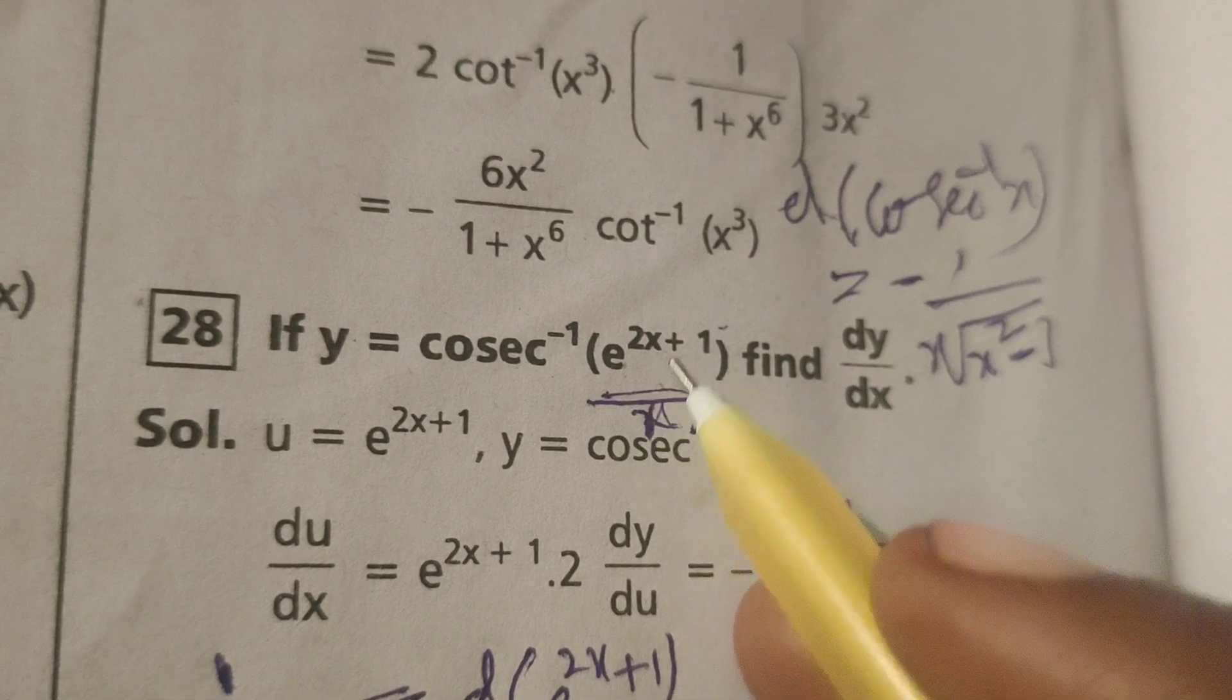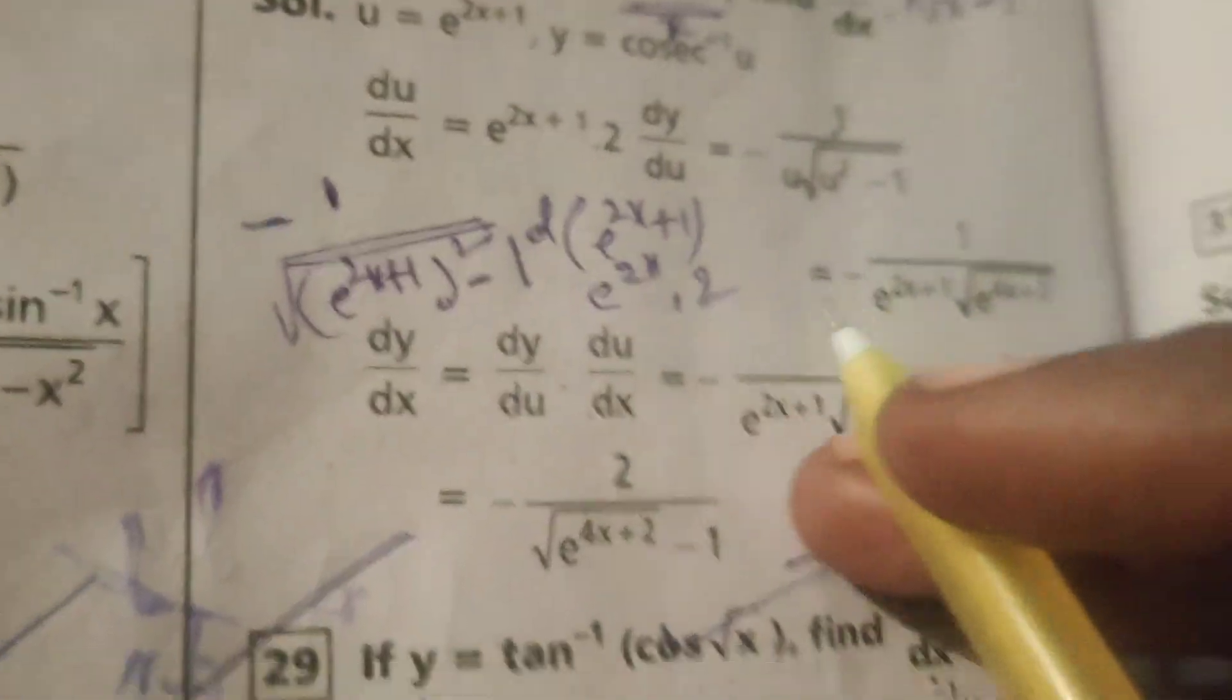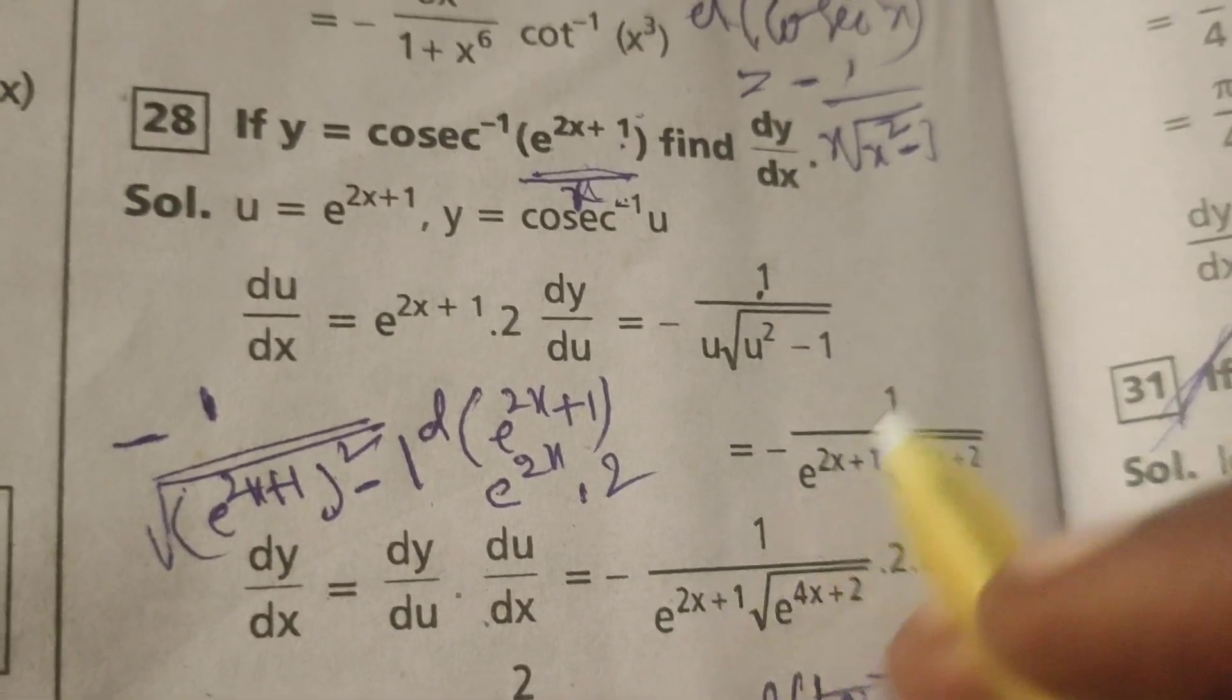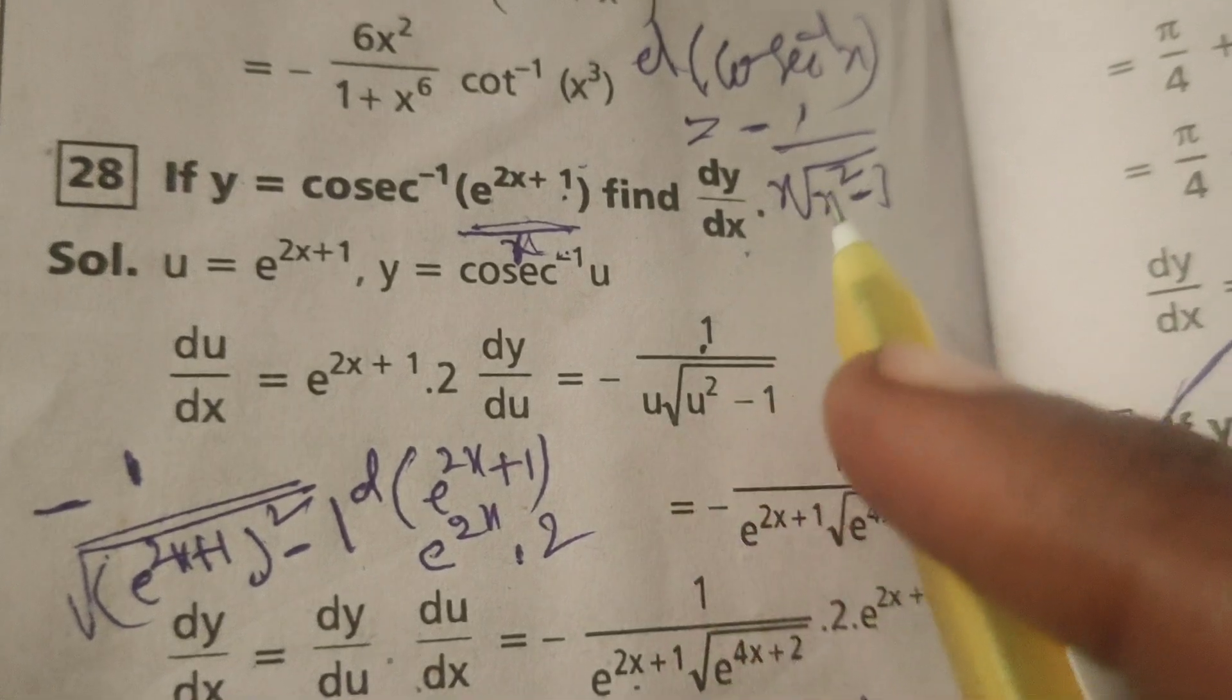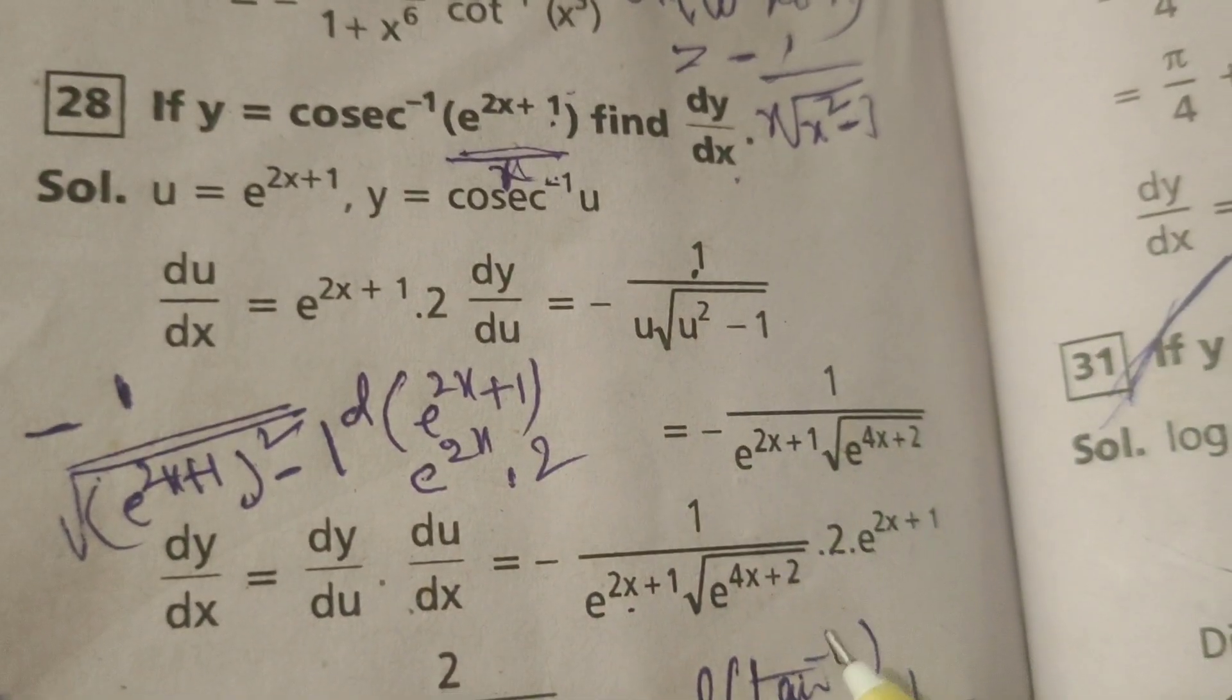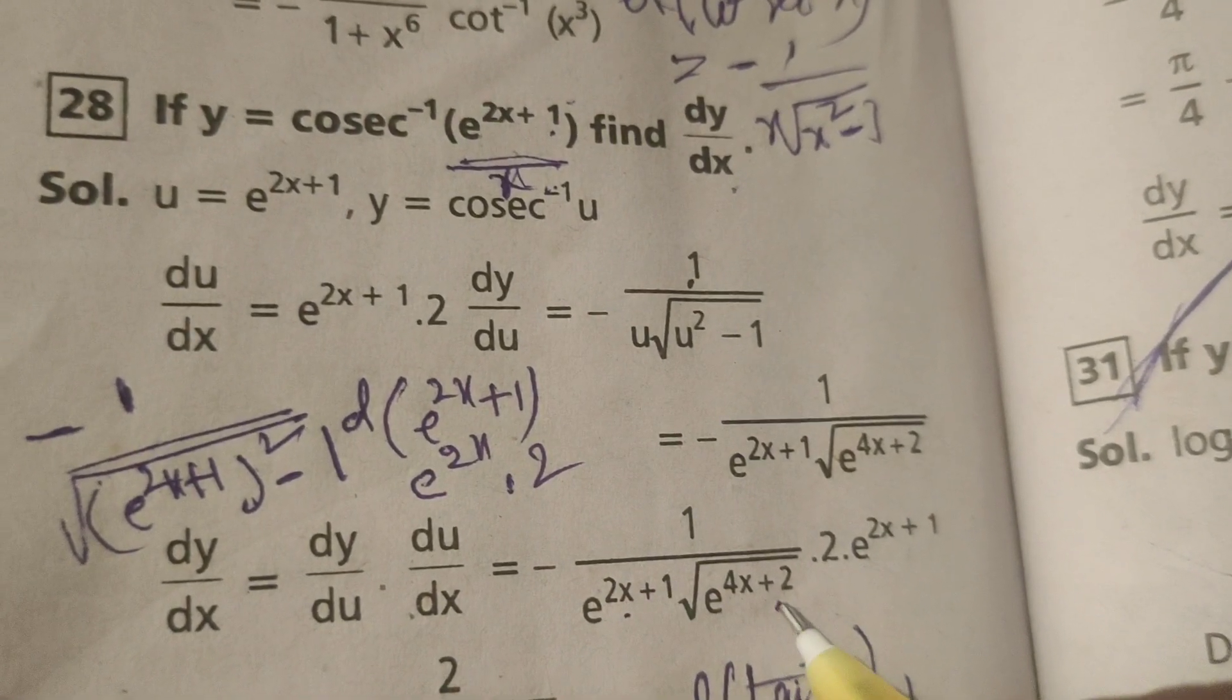But in place of x here, e power 2x plus 1 is there. So here write minus 1 by x means e power 2x plus 1. So e power 2x plus 1 root of e power 2x plus 1 whole square, whole square minus 1.